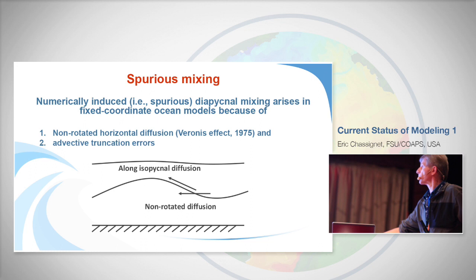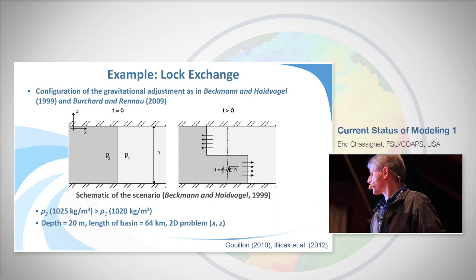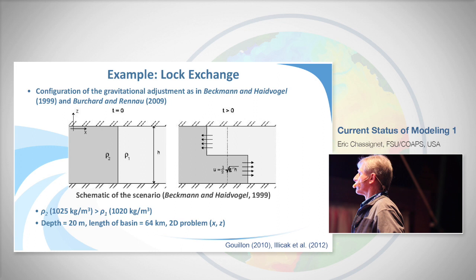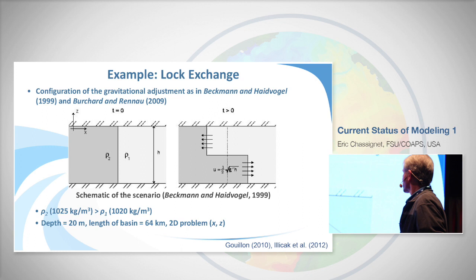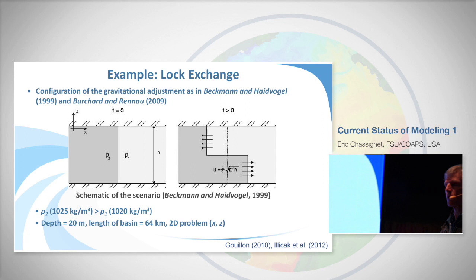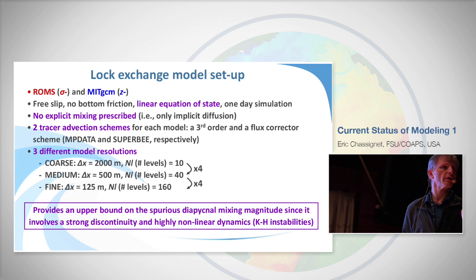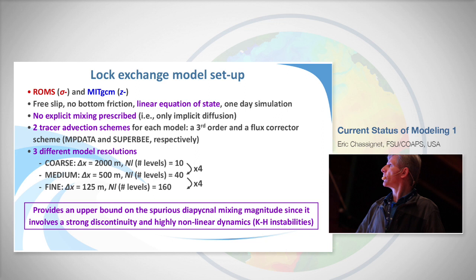One way to quantify this is the dam-break lock-exchange problem — work done by Flavien Gouillon from my group and followed up by Ilicak et al. at GFDL. You take density ρ₂ and ρ₁ in a lock exchange — this is well known theoretically: you have a front moving left and right, and no mixing should take place in an adiabatic context. With perfect theory available, you can design a test problem to look at the impact of choice of numerics, grid resolution, and so forth.